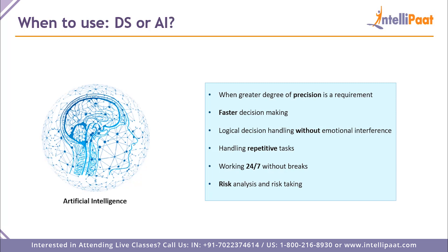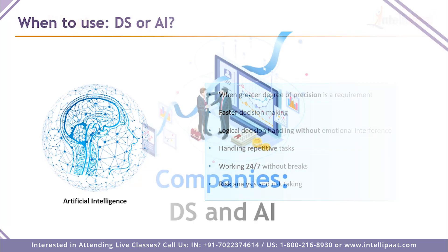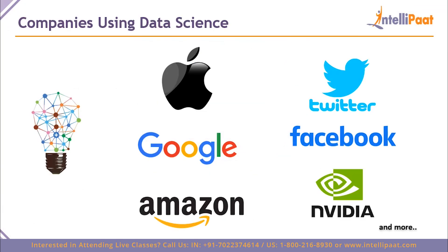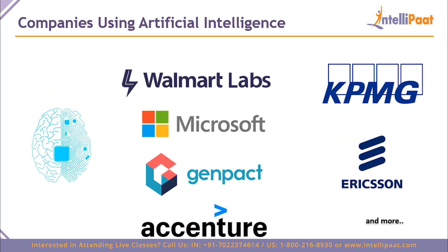Coming to the companies that make use of data science and artificial intelligence: for data science we have everyone from Apple, Google, Amazon, Twitter, Facebook, Nvidia, and thousands of other companies. For artificial intelligence, we have Walmart Labs, Microsoft, Genpact, Accenture, Ericsson, KPMG, and all the Fortune 500 companies you can think of. Data is an unruly entity, but data science and AI are in full swing to make it friendlier and help us work with it faster and more efficiently.